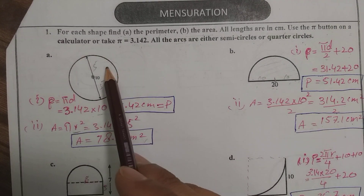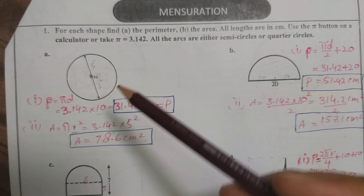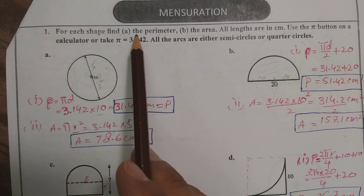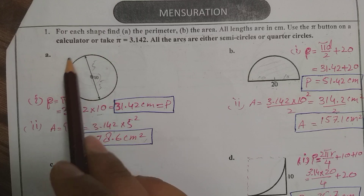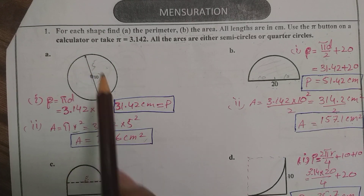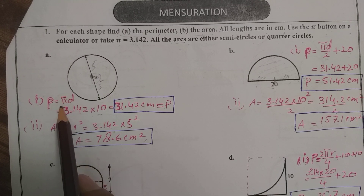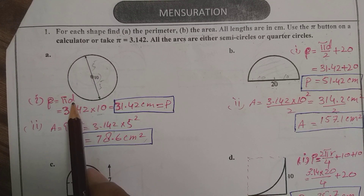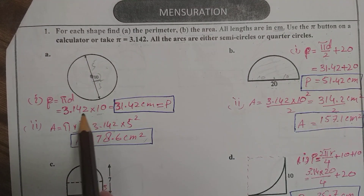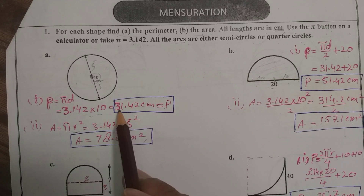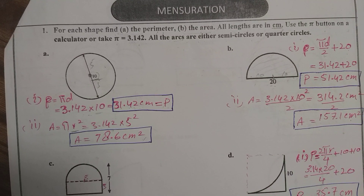In part a we are given a complete circle with diameter equal to 10. The perimeter means the circumference of the circle, which is also called the perimeter because it is the outer boundary of the shape. So P equals pi times d. Using pi as 3.142 and d as 10, we get the perimeter as 31.42 centimeters.